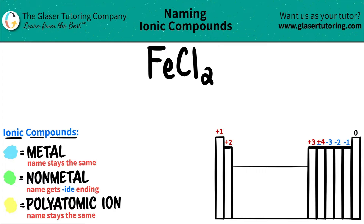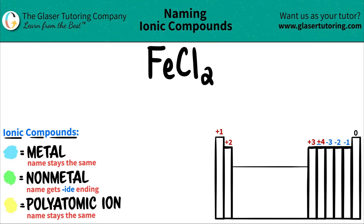Today we are going to be naming the ionic compound FeCl₂. In order to do this, let's spot out where these elements are on the periodic table to see what they are.